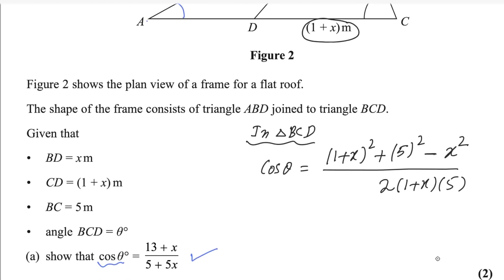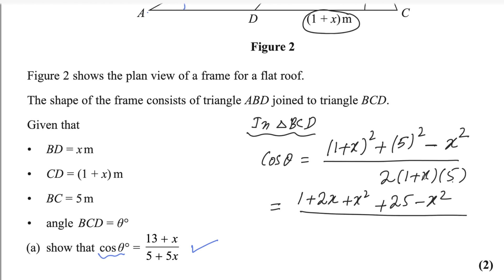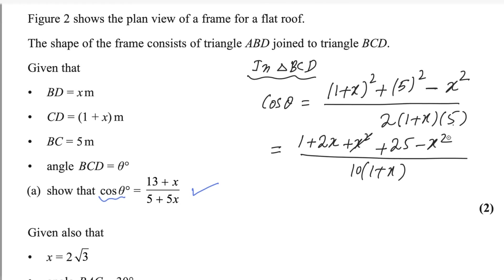Now if you simplify, you will get this result. Expand the bracket: 1 squared is 1, the cross term is 2x, and the last term is x². So expanding (1 plus x)² gives 1 plus 2x plus x². Then 5 squared is 25, and we subtract x². Divide by 5 times 2 equals 10, into (1 plus x). The x² and minus x² cancel out. 25 and 1 make 26, giving 26 plus 2x, divided by 10(1 plus x).